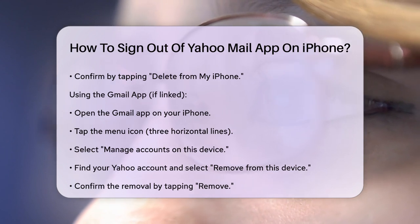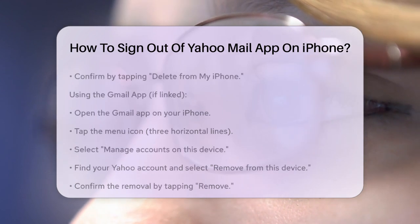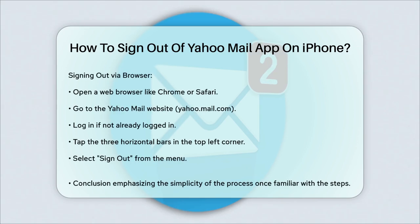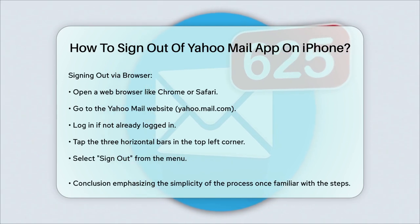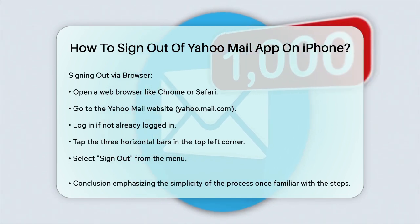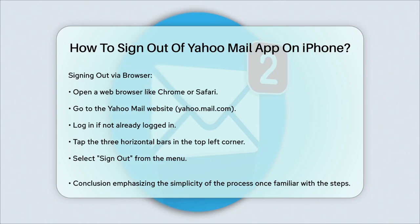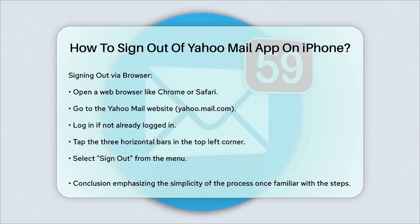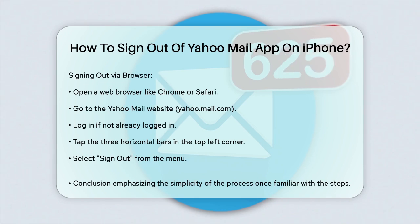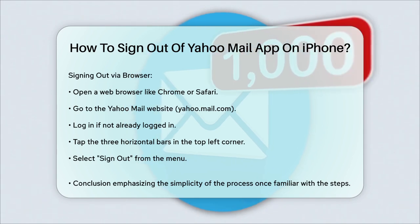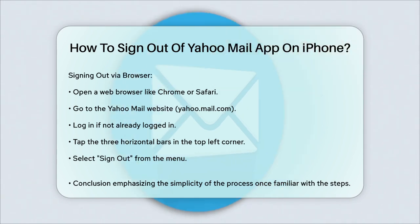Signing out via browser: if you prefer to use a browser, you can sign out that way too. Open a web browser like Chrome or Safari on your iPhone and go to the Yahoo Mail website. Log in to your Yahoo account if you're not already logged in. Tap the three horizontal bars in the top left corner of the screen and select Sign Out from the menu. This will log you out of your Yahoo Mail account on your iPhone.